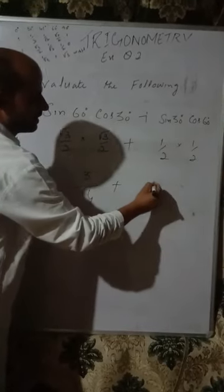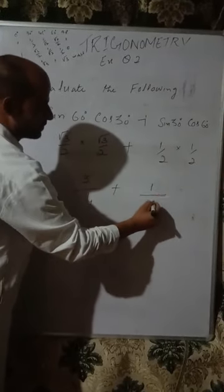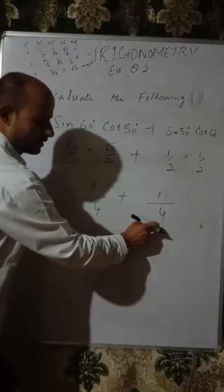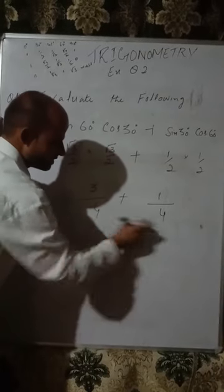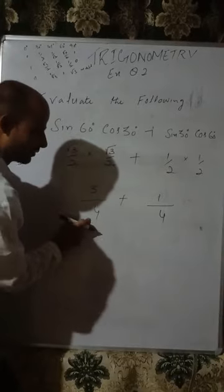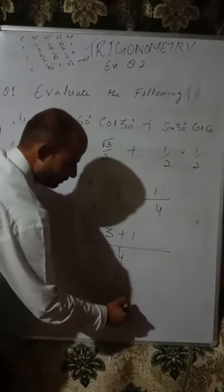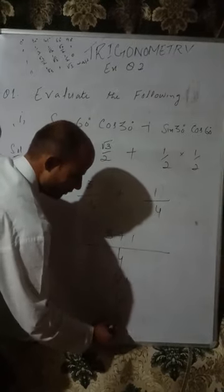Plus 1 into 1 that is 1, and 2 times 2 is 4. Now we have 3/4 plus 1/4. The denominator is the same — both are 4. So 3 plus 1 equals 4, giving us 4/4, which equals 1. This is the solution of the first part.